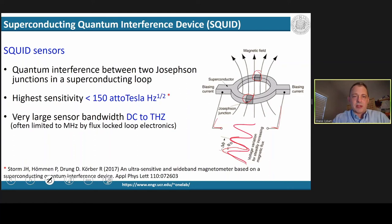SQUID sensors have the highest sensitivity of any sensor. Recently, PTB demonstrated SQUID sensors with noise levels as low as 150 AttoTesla. They also have a very large sensor bandwidth from DC all the way up to terahertz.